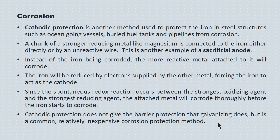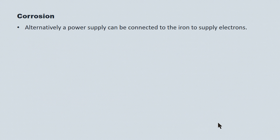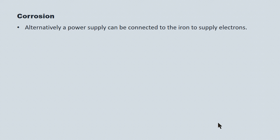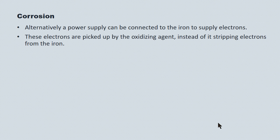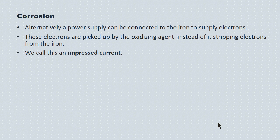Cathodic protection does not give the barrier protection that galvanizing does, but it's common and relatively inexpensive. Alternatively, a power supply can be connected to the iron structure. Since oxidizing agents in the environment want electrons, if you supply a free current of electrons, you can set the current such that they'll be preferred over the electrons that could strip off the iron. This is seen in new cars, where the body and frame are wired to a very low-level electrical current to protect against rust. We call this an impressed current.